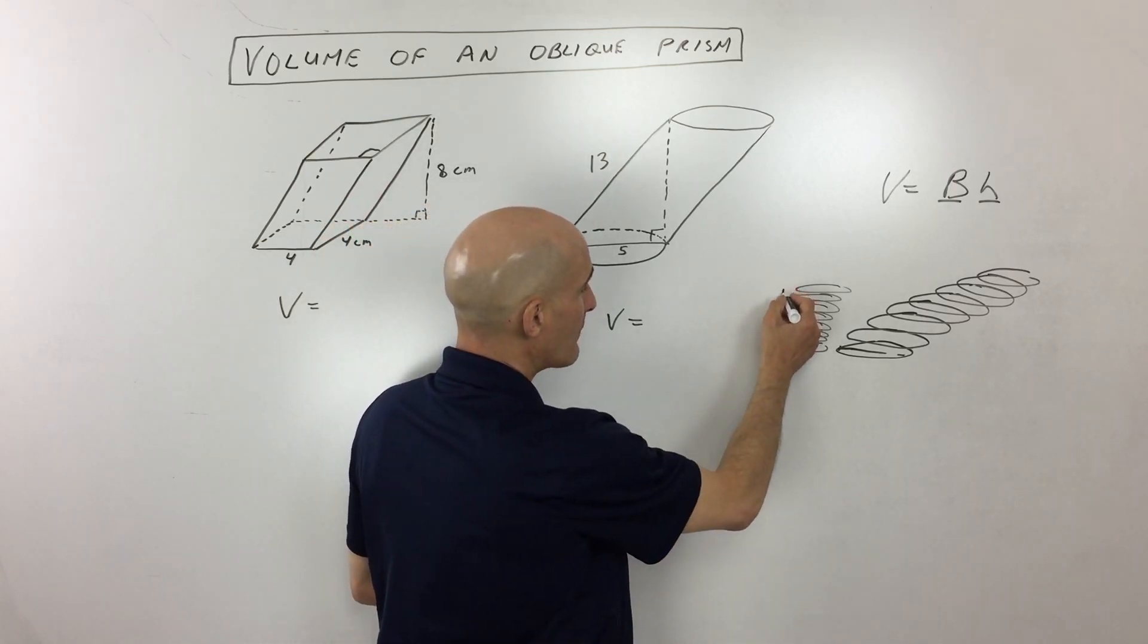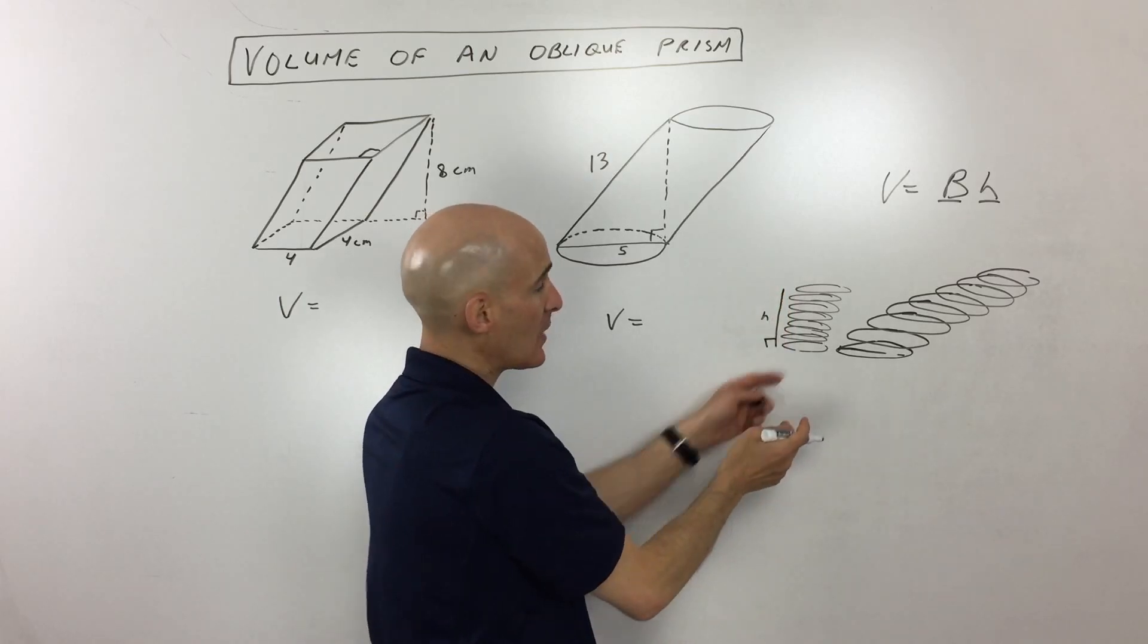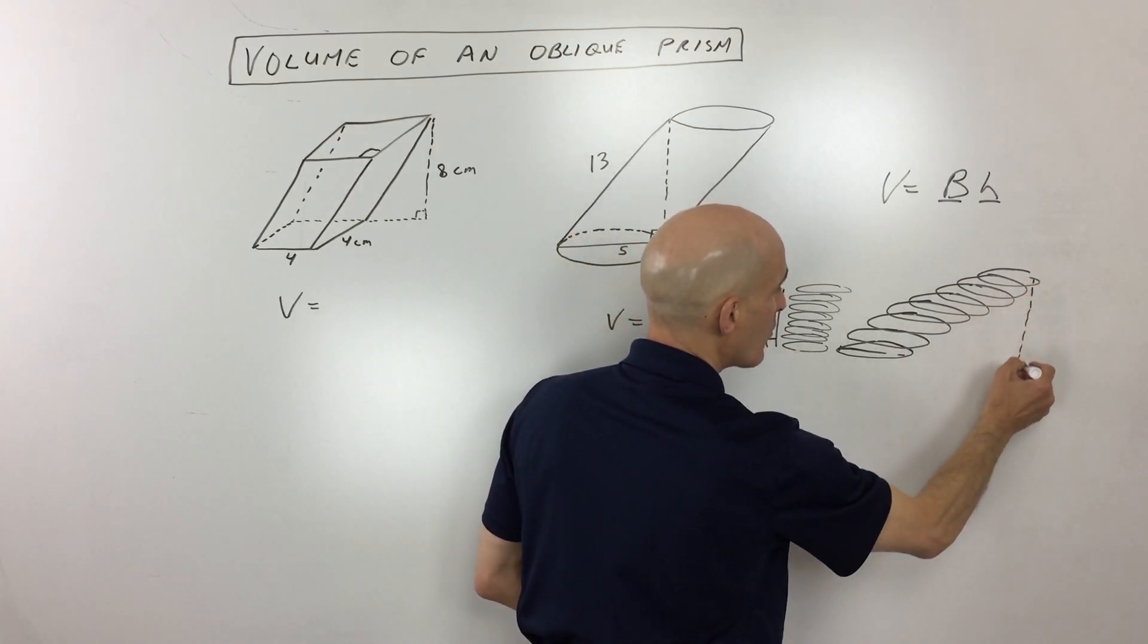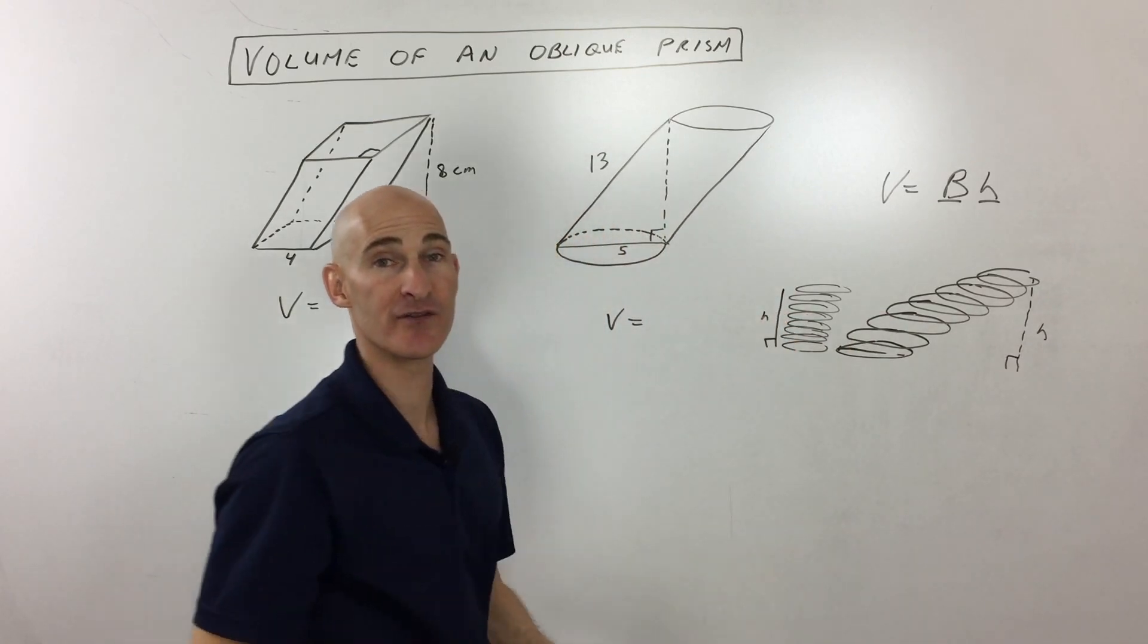you just find the area of the base. But what you want is you want that perpendicular height, the height that's at a right angle to the base. So over here, what we want is we want this height right here, which should be the same as this height over here. They're exactly the same.